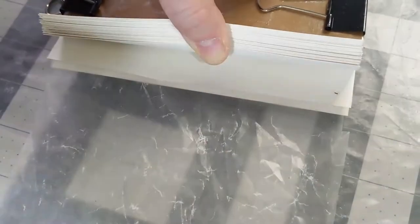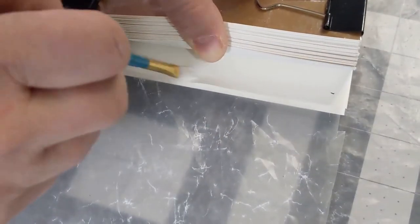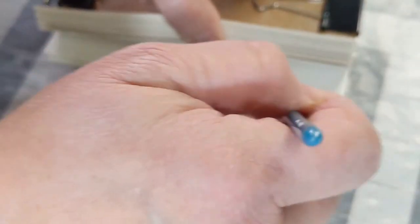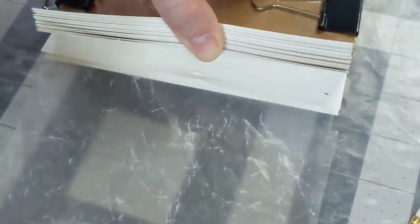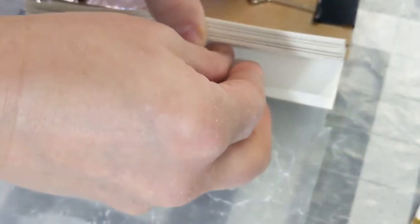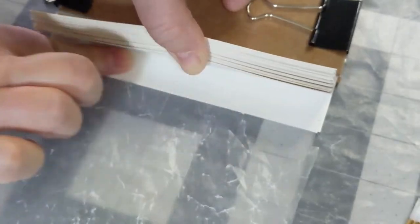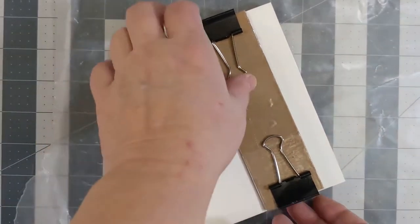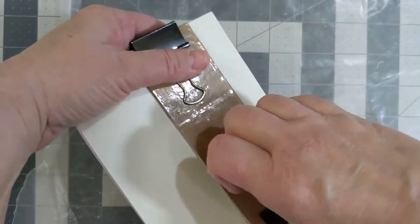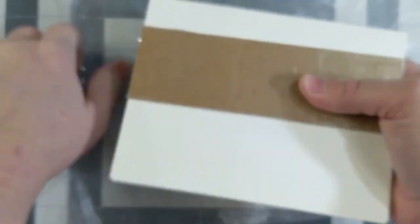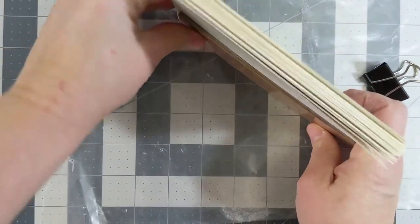Glue the fore edge folios together much in the same way that you did the spine. When you've glued the fore edge completely, remove the binder's clips and board, move it up to make a press, and let it dry for the same amount of time as you did the spine.